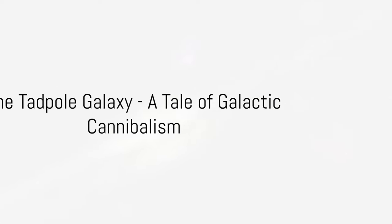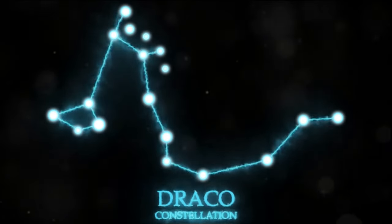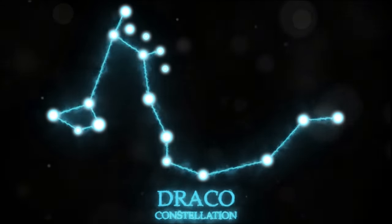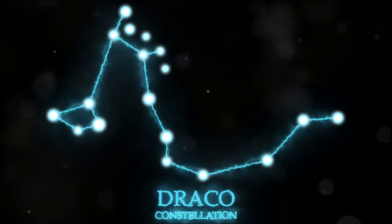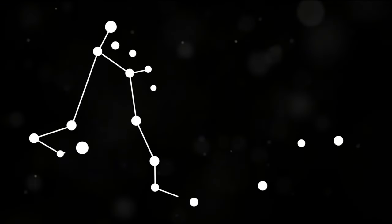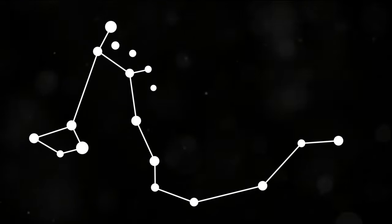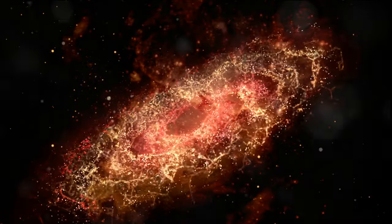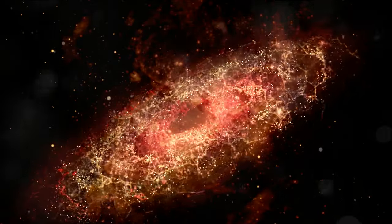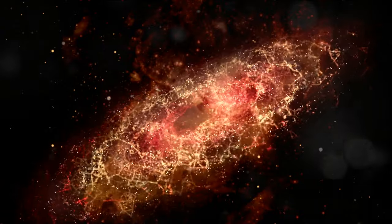A tale of galactic cannibalism unfolds in the Tadpole Galaxy. Let's journey to the constellation of Draco, the dragon, where the Tadpole Galaxy spins its tail. This cosmic spectacle is nestled 420 million light-years away from our home planet Earth. It's a distance so vast that the light we see today began its journey when the first dinosaurs roamed our world. The Tadpole Galaxy is a peculiar sight, even in the grand tapestry of the cosmos. Its most distinguishing feature is its tail, a trail of stars and gas that stretches out behind it. But this tail is more than just a pretty feature. It tells a story of a violent past, a tale of cosmic cannibalism.